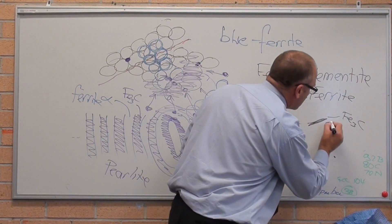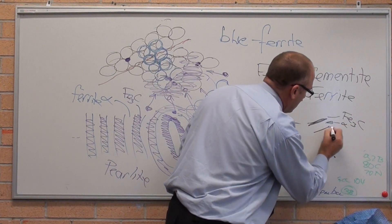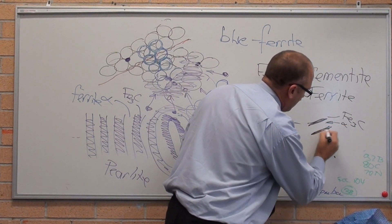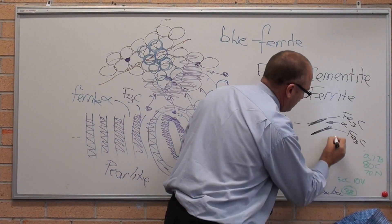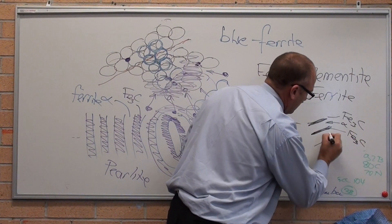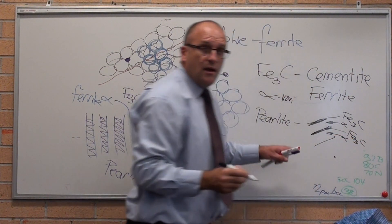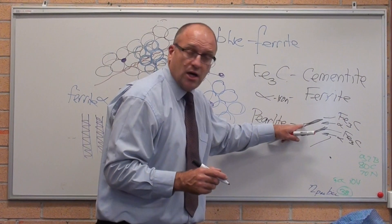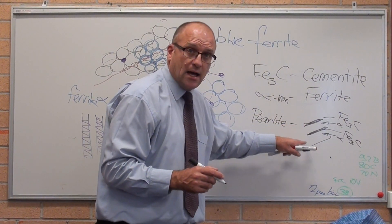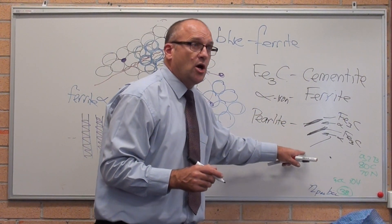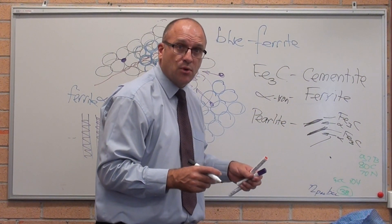It's also got alpha iron. So it's got iron carbide and alpha iron. That layered structure of iron carbide and ferrite — iron carbide, ferrite, iron carbide, ferrite — is called pearlite.